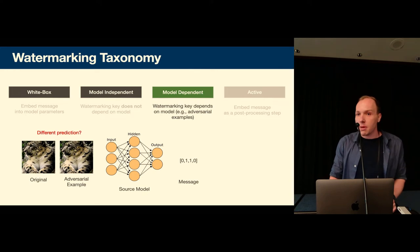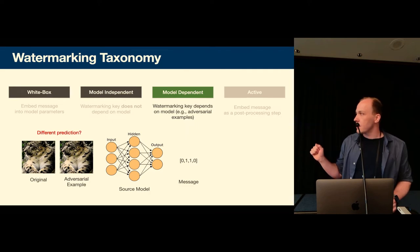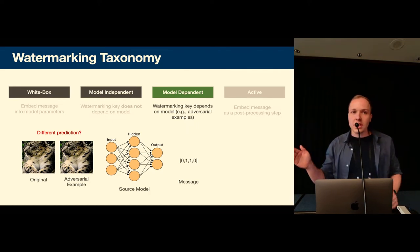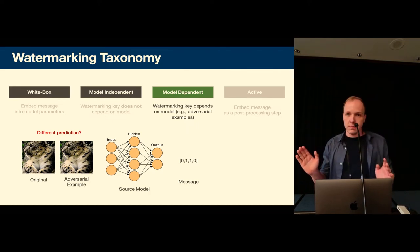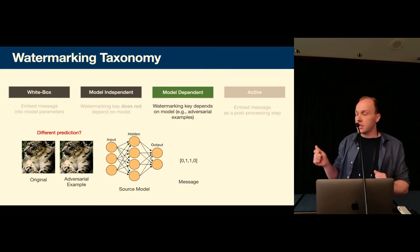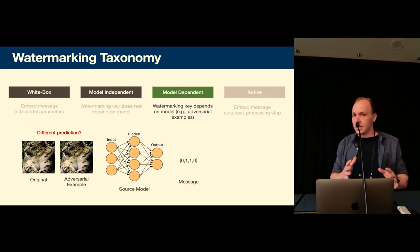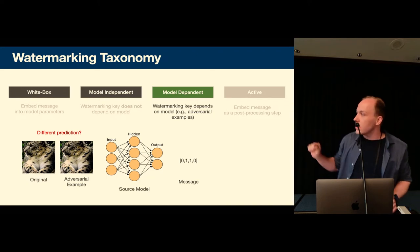Then there's model dependent watermarking that mostly, most of the schemes that we looked at depend on adversarial examples. Here the defender would adversarially train the source model and then we would check if the deployed model is vulnerable to the adversarial attack or not. If the deployed model is not vulnerable to the attack then we decode that as a one and otherwise as a zero in the message.